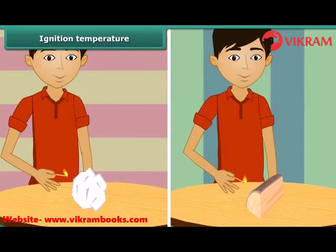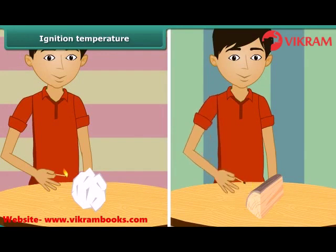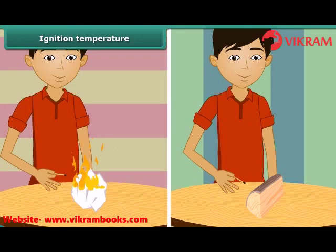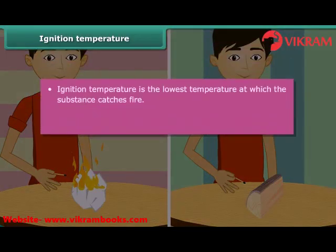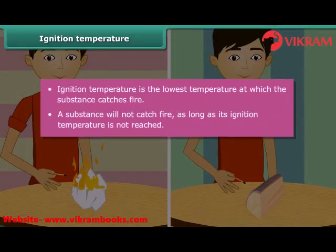We just saw that paper burns when lighted with a matchstick. Now bring the matchstick close to a piece of wood. The piece of wood does not catch fire. One lighted matchstick is not able to burn the piece of wood, but a piece of paper burned quickly. This is because the piece of wood has not reached its ignition temperature. Ignition temperature is the lowest temperature at which a substance catches fire.